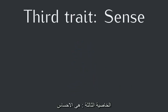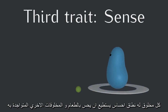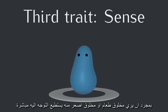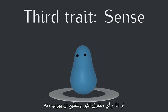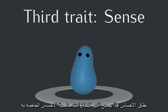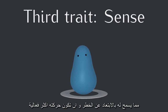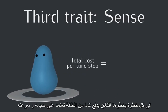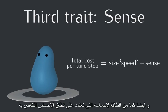The third trait is sense. Each creature has a certain sensing distance at which it can sense food or other creatures. Once a creature sees food or a smaller creature, it can move straight toward it. Or if it sees a bigger creature, it can run away. This sensing distance gets larger as a creature's sense trait goes up, allowing it to avoid danger and be more efficient with its movements. Each time step, a creature pays a movement energy cost, which depends on its size and speed, and a sensing energy cost, which is just equal to its sense trait.